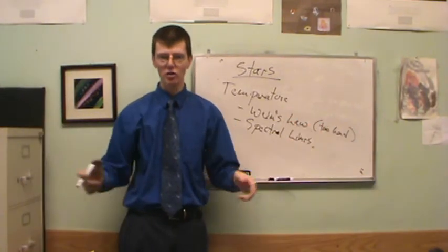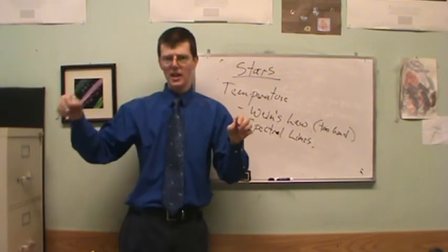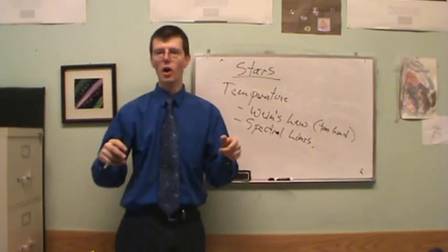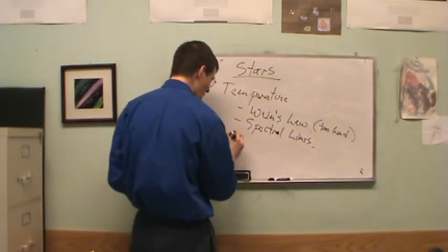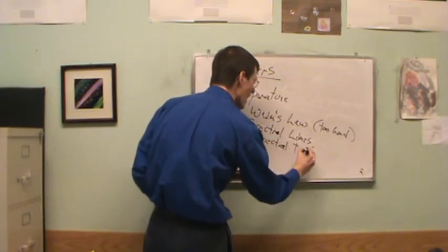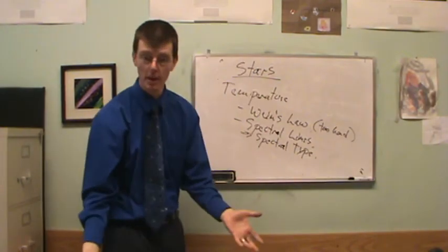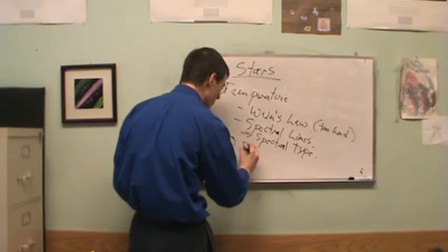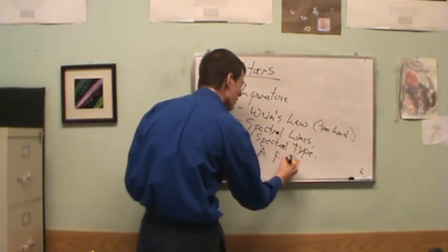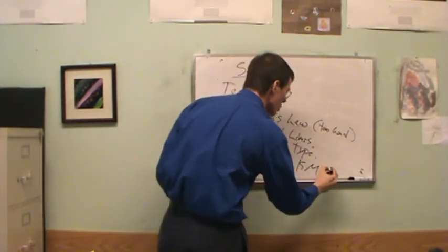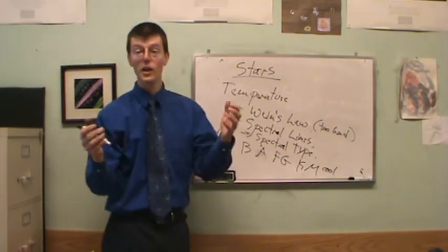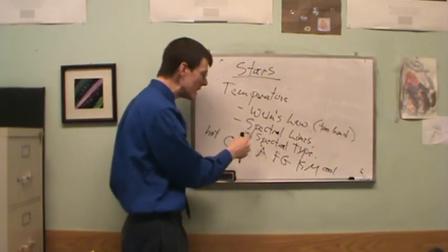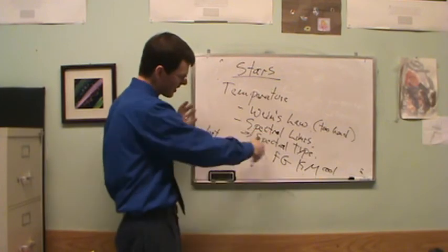So astronomers invented a system of classifying stars by the strength of different spectral lines. It originally went A, B, C, D... but they realized it wasn't telling them about chemical composition — it was telling them about the heat, the surface temperature of the star. So they reorganized and threw out some letters. The spectral types are O, B, A, F, G, K, and M. The hottest stars are type O; the coolest are type M. I can even add a number — so B0 is hotter than B2, which is hotter than B9, and then A0 takes off from there.